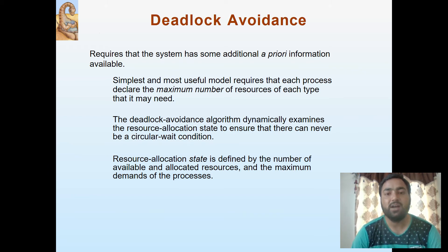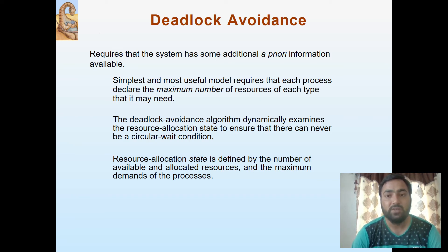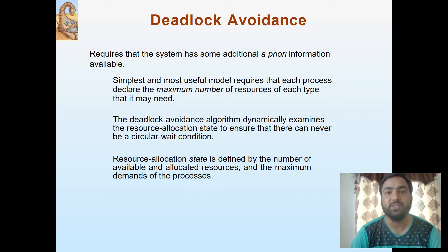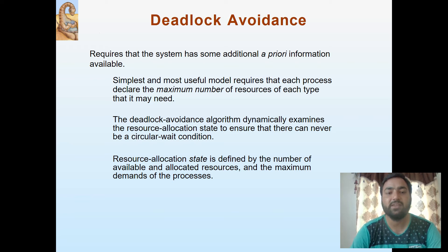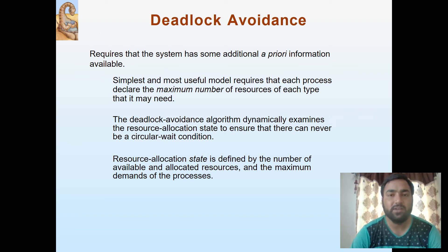The deadlock avoidance algorithm dynamically examines the resource allocation state to ensure that there can never be a circular wait condition. The resource allocation state is defined by the number of available and allocated resources and the maximum demand of the processes.